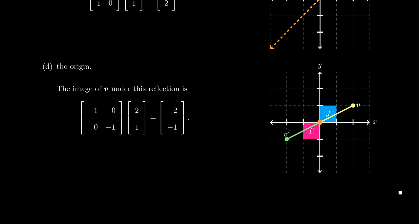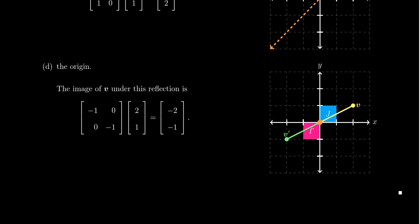Reflecting through the origin means multiplying by the scalar matrix [-1, 0; 0, -1], so (2, 1) maps to (-2, -1). Geometrically, you travel from your point through the origin and continue the same distance in the same direction. Importantly, reflection through the origin is equivalent to rotating the plane by 180 degrees. Because of this, we won't focus much on reflections through points — instead we'll focus on reflections across lines: the x-axis, y-axis, and the diagonal y = x.